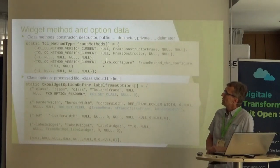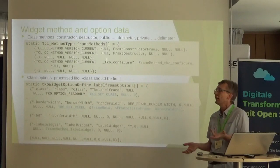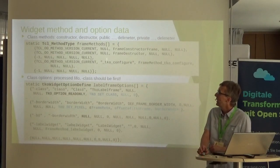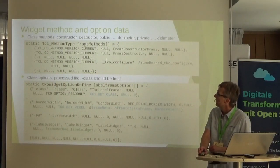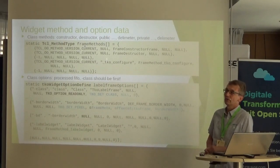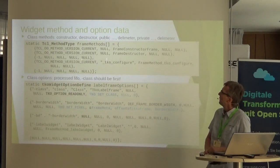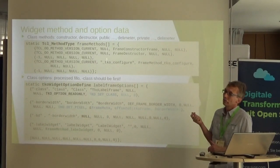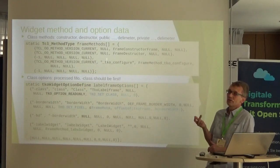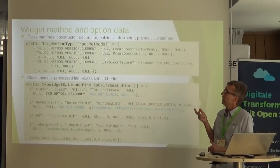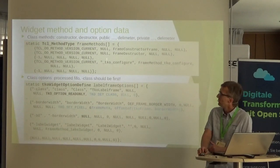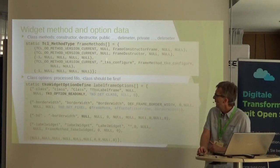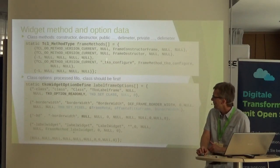To define a new widget, you create a class and put your options in it. To make it easier, there are two structures: the first holds the methods of the new class — always starting with the constructor, then the destructor — then a list of common options, public options, and internal options.